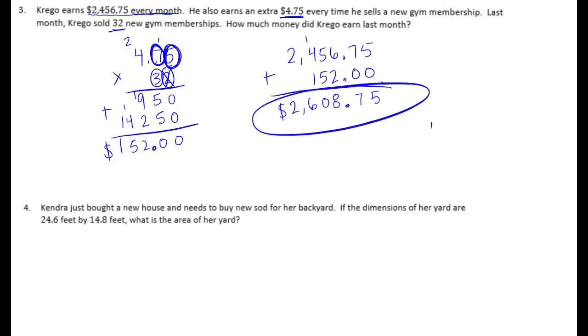Number 4. Kendra just bought a new house and needs to buy new sod for her backyard. If the dimensions of her yard are 24 and 6 tenths feet by 14 and 8 tenths feet, what's the area of her yard? Area is length times width. So we're going to do 24 and 6 tenths times 14 and 8 tenths.